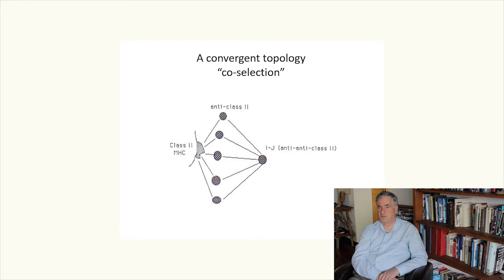This accounts for IJ being a well-defined serological entity, serologically detectable entity, more so than can be the case for a divergent topology.